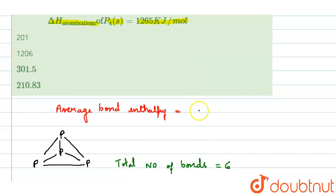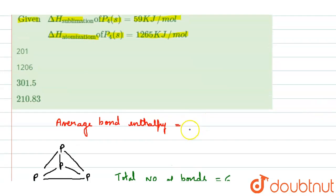While calculating the average bond enthalpy, we have to know that it is delta H of atomization minus delta H of sublimation divided by total bonds.